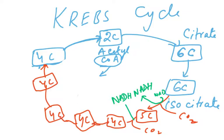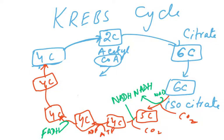In the next step, ATP is going to be formed — ADP to ATP — and this is called substrate level phosphorylation. Then in the next step FADH is formed; FADH is another coenzyme, so dehydrogenation has taken place. Dehydrogenation takes place whenever NADH or FADH is formed, so FAD is converted to FADH.